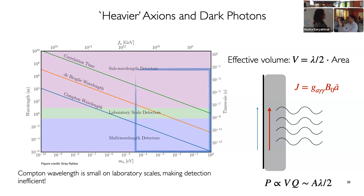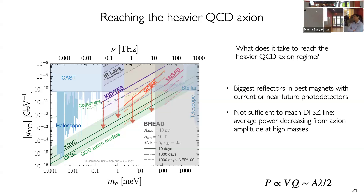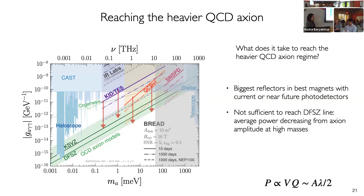In the limit where the wavelength is much smaller than your conversion volume, you're not winning by volume — you're only winning by area. These are some proposals from the BREAD experiment, a very clever way to maximize the conversion area within a magnetic volume. These are different types of detectors hoping to cover some of this parameter space. But even with pretty optimistic detector technologies and dividing by a factor of 100 to project future readout improvements, most of these are not even coming close to the bottom of the QCD axion line. We need to do something else to keep increasing the power.